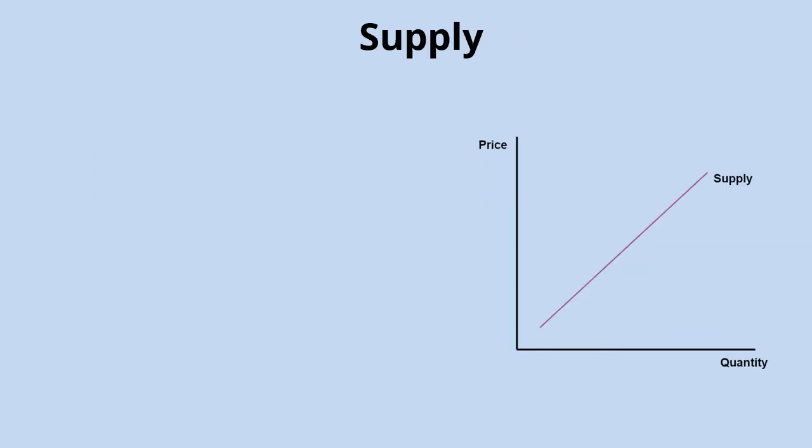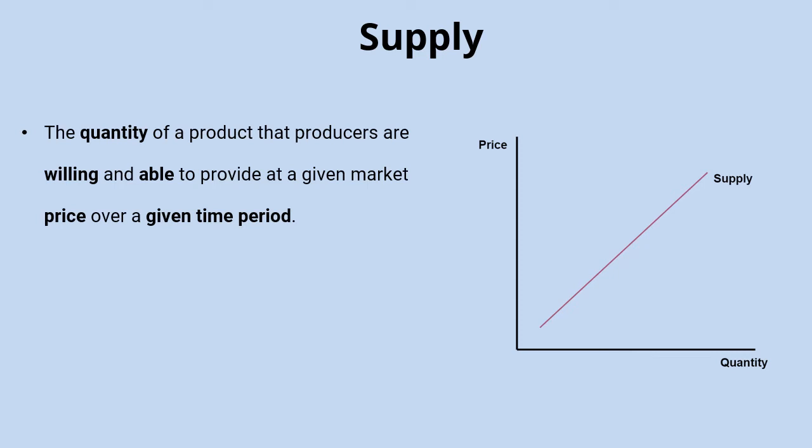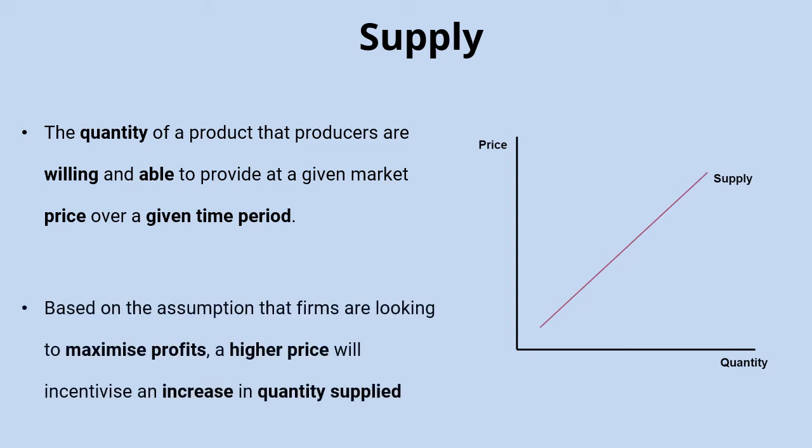Moving from demand onto supply, you'll see a lot of similarities in the definition. Where with demand we look at consumers and what they're willing and able to buy, with supply we look at producers and what they'd be willing and able to provide or produce at a given market price and over a given time period. Consumers look to maximize their utility and get best value for money, giving that inverse relationship between price and quantity demanded.